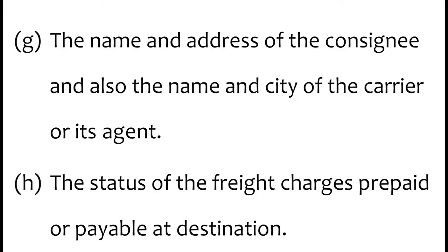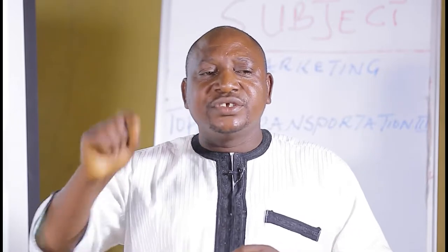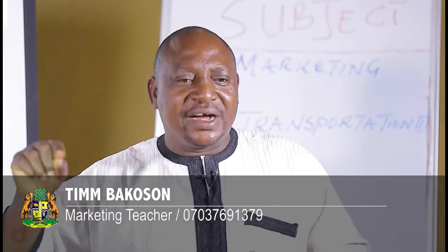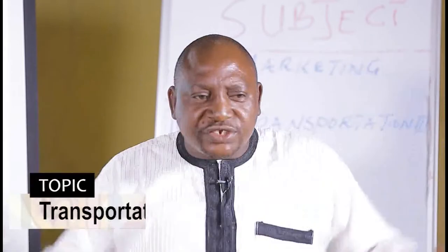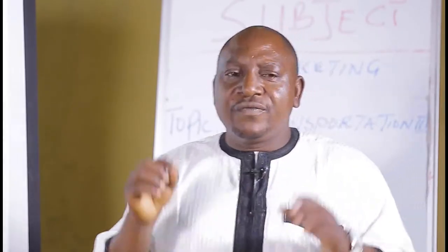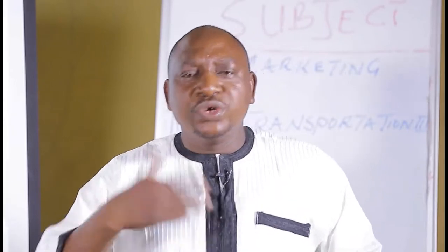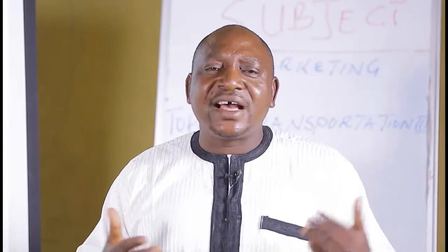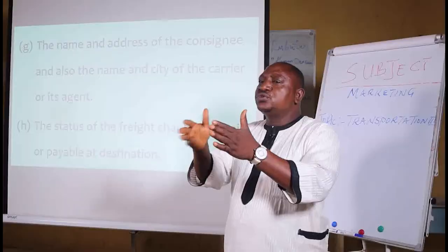G: the name and address of the consignee, and also the name and the city of the carrier or its agents. The name and address of the consignee — that is the shipper or the shipment — must accompany the goods that are to be taken to the destination. And the name of the city: which particular area in that city that these goods will be deposited at.